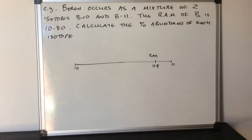The way I think about it is I liken it to a tug of war. In this case we've got two isotopes, 10 and 11. If you think about it, if they were both pulling as hard as each other, then the relative atomic mass will be right in the middle at 10.5.